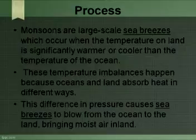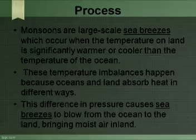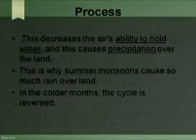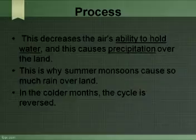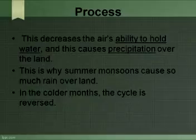However, when the air rises and while it is over the land, the air cools. This decreases the air's ability to hold water, and this causes precipitation over the land. This is why summer monsoons cause so much rain over land.